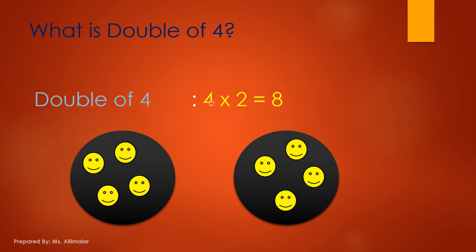That's another method: 4 times 2. Look at the 2 here — which means you must draw 2 big circles. In each circle, draw 4 emojis: 1, 2, 3, 4. And in the second circle, another 4: 1, 2, 3, 4. Now just count everything together: 1, 2, 3, 4, 5, 6, 7, 8. So the answer is 8. We have 3 ways to find the answer 8.